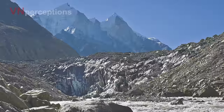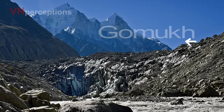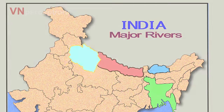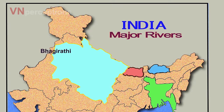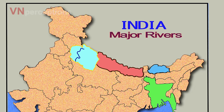River Ganga originates from Gangotri glacier at Gomukh. The headwaters of Ganga are known as Bhagirathi. It joins River Alakhnanda at Devprayag, and from here the river is known as Ganga.